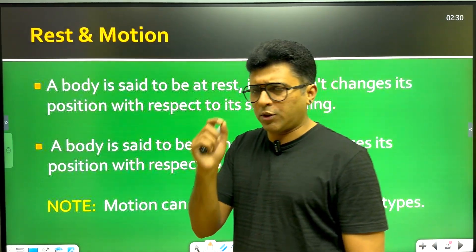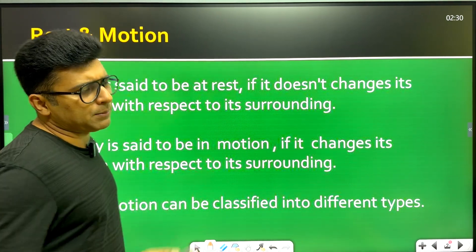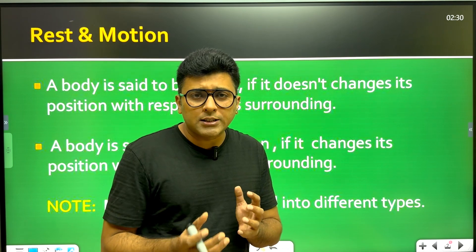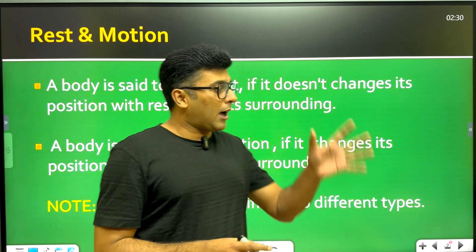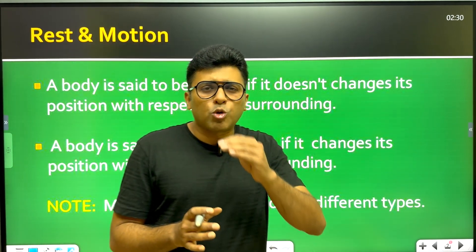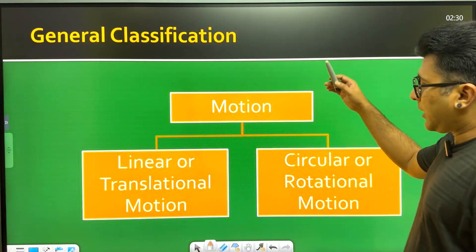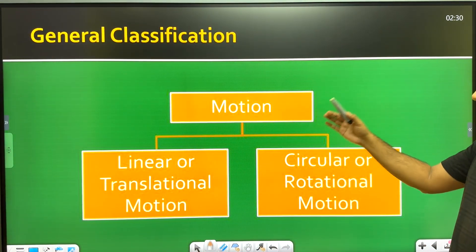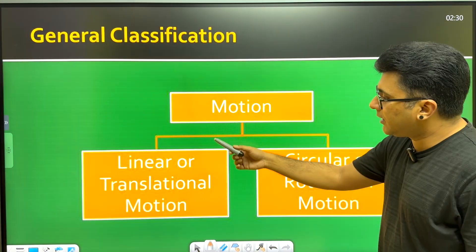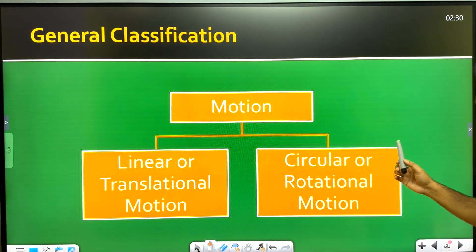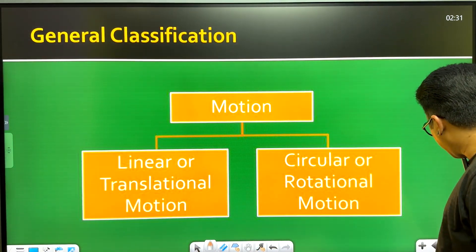Now we look at the definition and note that motion can be classified into different types. We are going to discuss projectile motion, motion in a straight line, circular motion, rotational motion, and simple harmonic motion. In this chapter, we are mainly going to do motion in a straight line, which includes linear and translational motion.